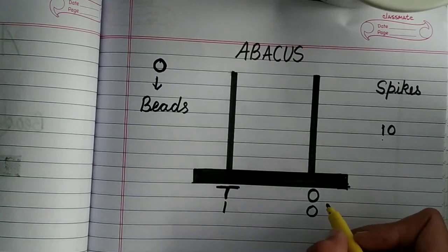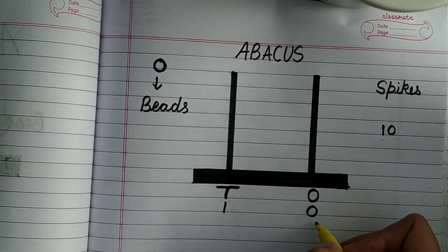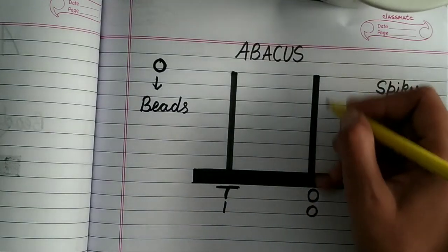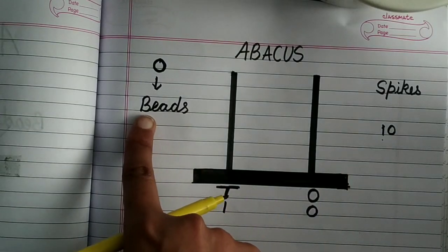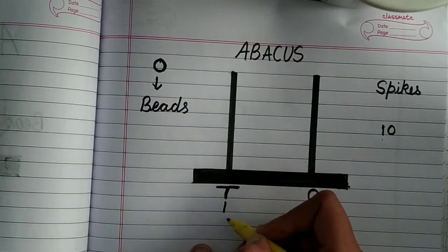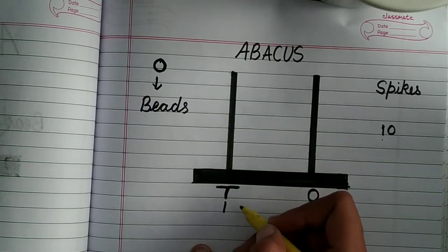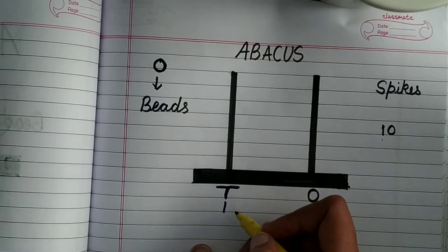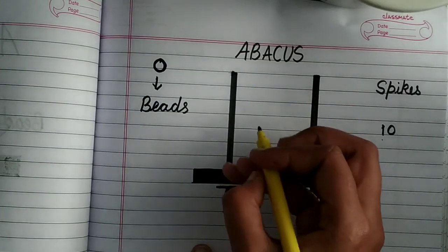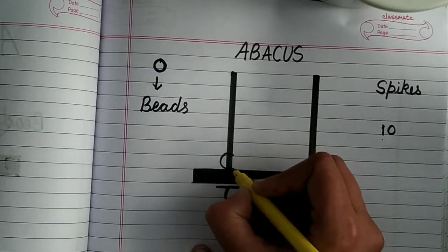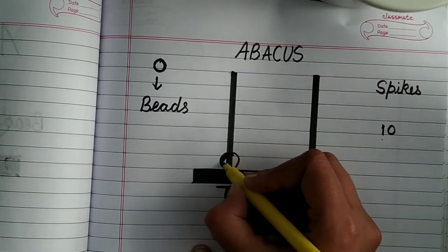So now see how many beads are there? Zero. That means in ones spike, I don't have to make any bead. But how many beads are there in this tens spike? One. So I will make one bead and I will color it.